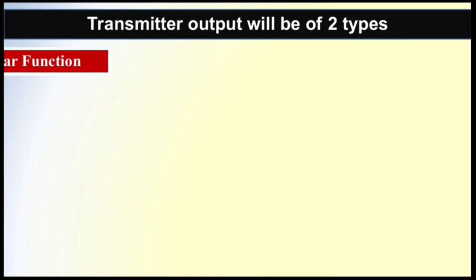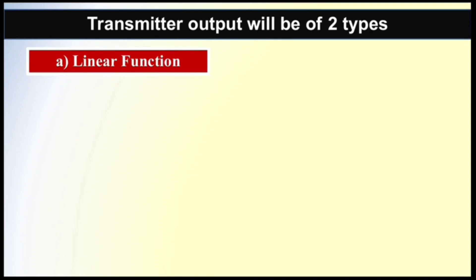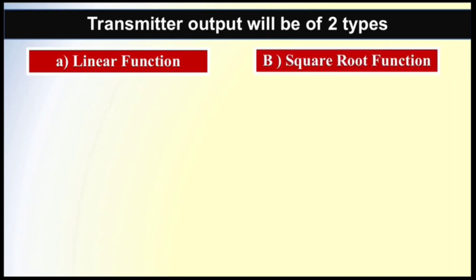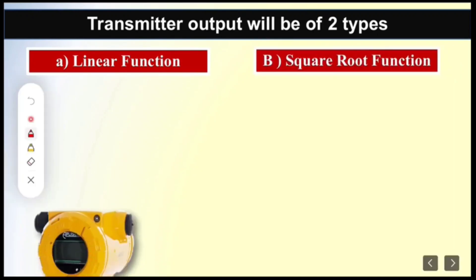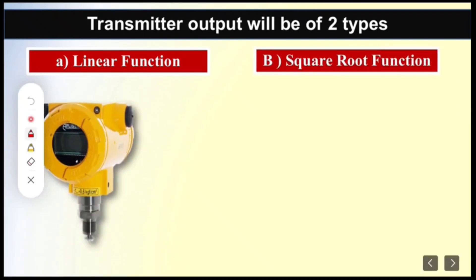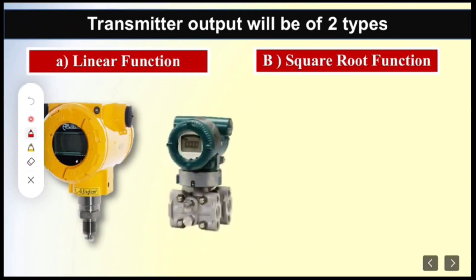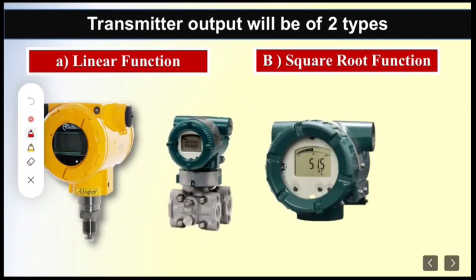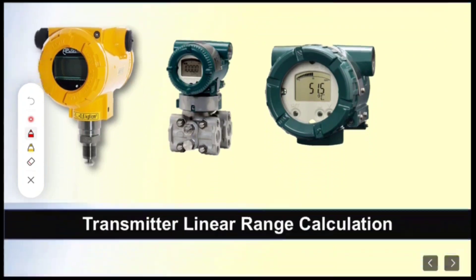Friends, the output of a transmitter is of two types. First is linear function and the second is square root function. It may be any transmitter — a pressure transmitter, DP type transmitter, temperature transmitter or any other transmitter — its output will either be a linear function or a square root function.